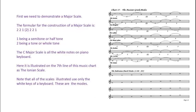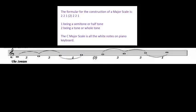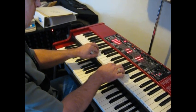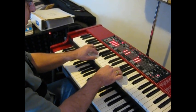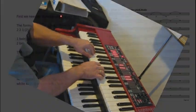The formula for the construction of a major scale is 2, 2, 1, 2 in the brackets and 2, 2, 1. 2 being a whole tone and 1 being a half tone. Now the C major scale is played on all the white notes of the piano and it is demonstrated in this chart on the 7th line.